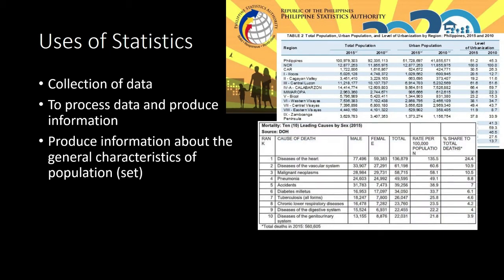Another example of information revealed after processing data is the leading causes of death in our country. The first cause involves diseases related to the heart, and the next involves the vascular system — that is why they are called cardiovascular diseases, since 'vascular' refers to blood vessels.